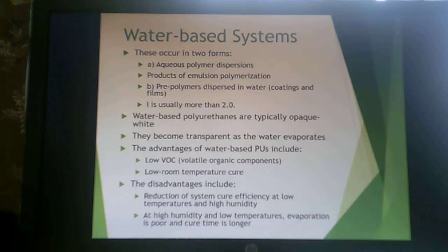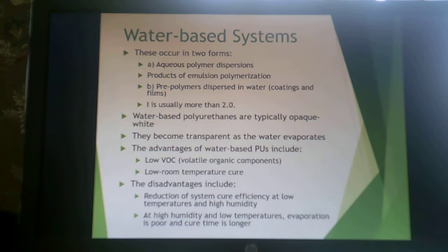The advantages of water-based polyurethanes include low or no VOC systems — no volatile organic compounds — and low room temperature cure. The disadvantages include it's not a very efficient cure system. If it's low temperature and high humidity, the cure is even less efficient because you have to evaporate water for them to cure properly. At 40°F and 65–80% humidity, it's going to take longer to cure and will be tacky.